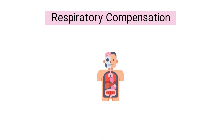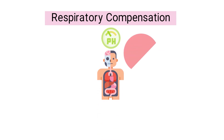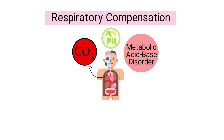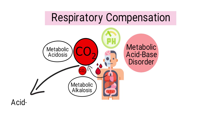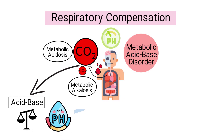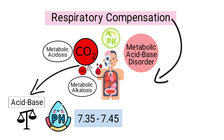Respiratory compensation is the body's way of trying to maintain a normal pH level when a metabolic acid-base disorder is present. To do this, the lungs will either remove more CO2 from the blood in the case of metabolic acidosis, or less CO2 in the case of metabolic alkalosis, helping to offset the imbalance and bring the pH level back into the normal range.